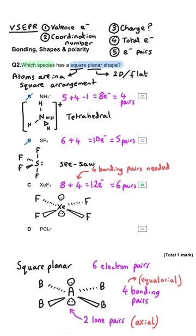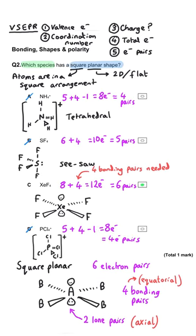Just to double-check D: phosphorus is in group five, there are four chlorines attached, and taking away one electron because it's positive gives us eight electrons — four pairs, tetrahedral shape.